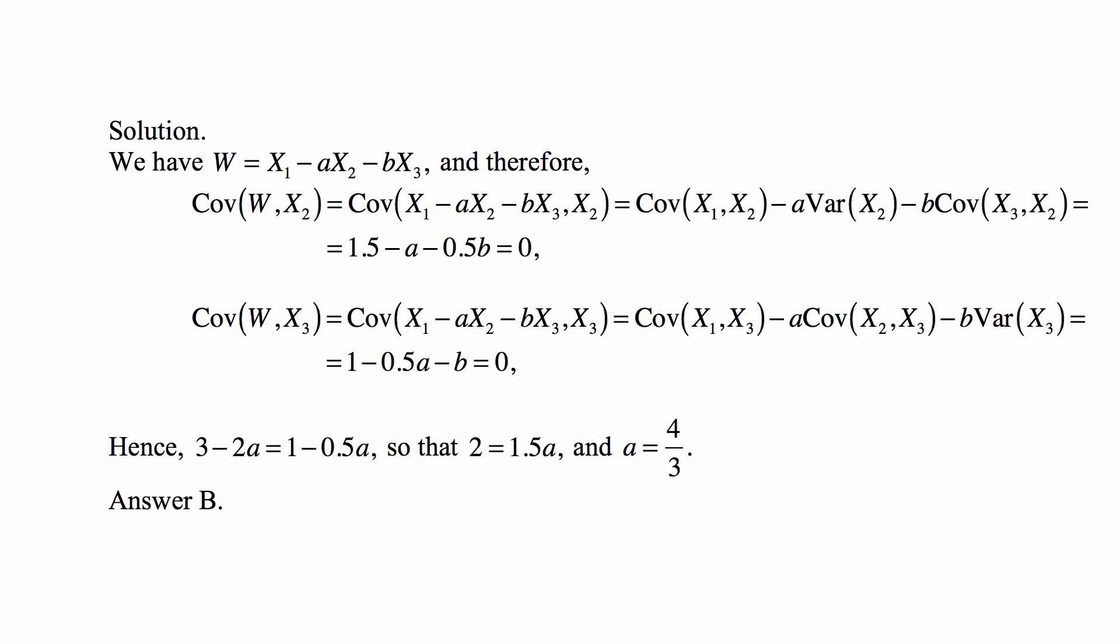But this implies that if we solve both equations for 0.5 B, or for B really, then we would get 3 minus 2A equal to 1 minus 0.5A. Yes, for B really, because the first one will give us 0.5B we need to multiply by 2 and then we'll get 3 minus 2A. And this means that 2 is equal to 1.5A and A is equal to 4 thirds, which is answer B.